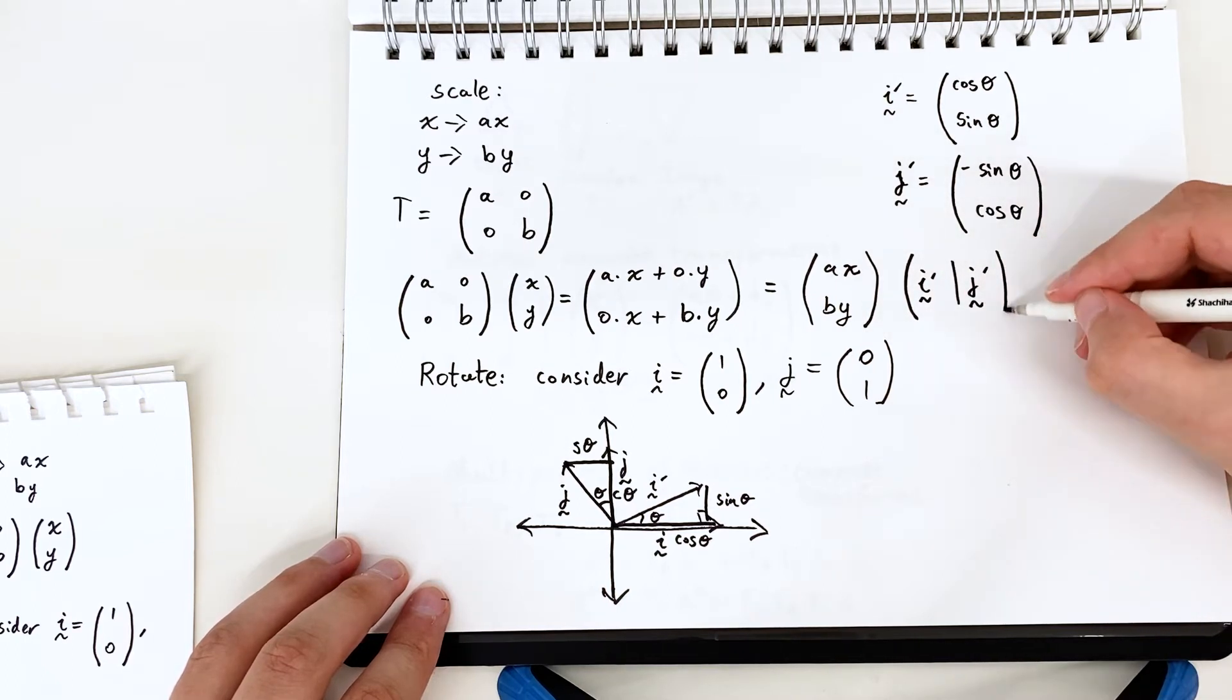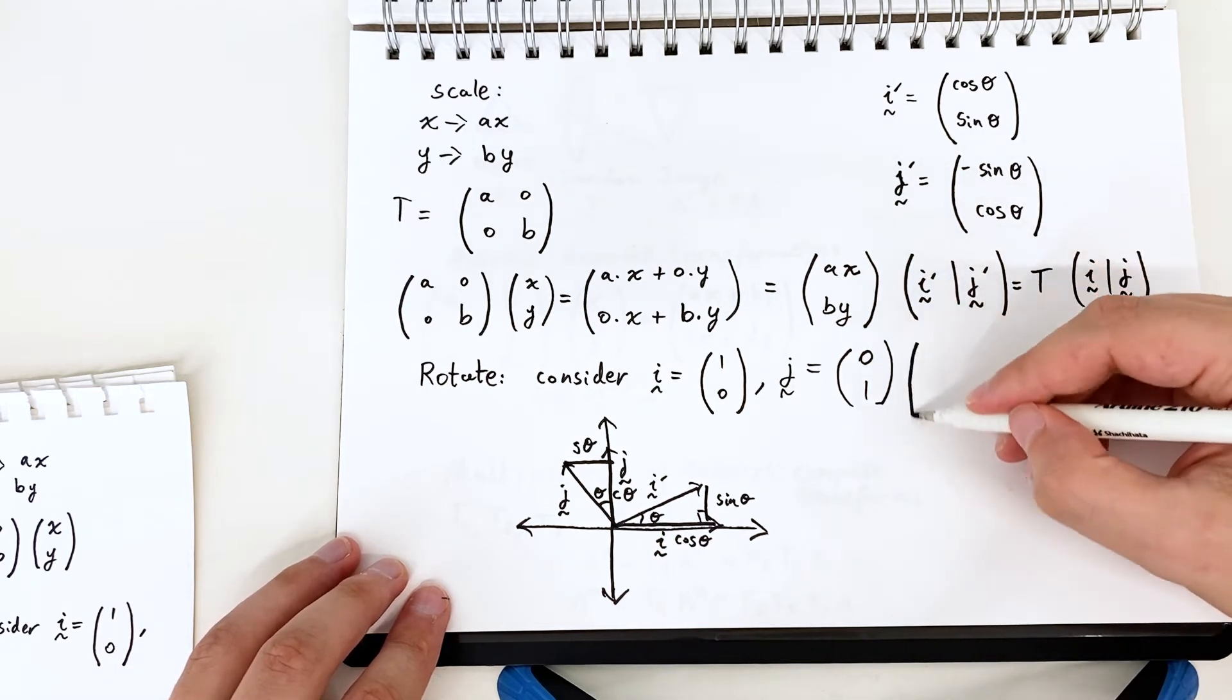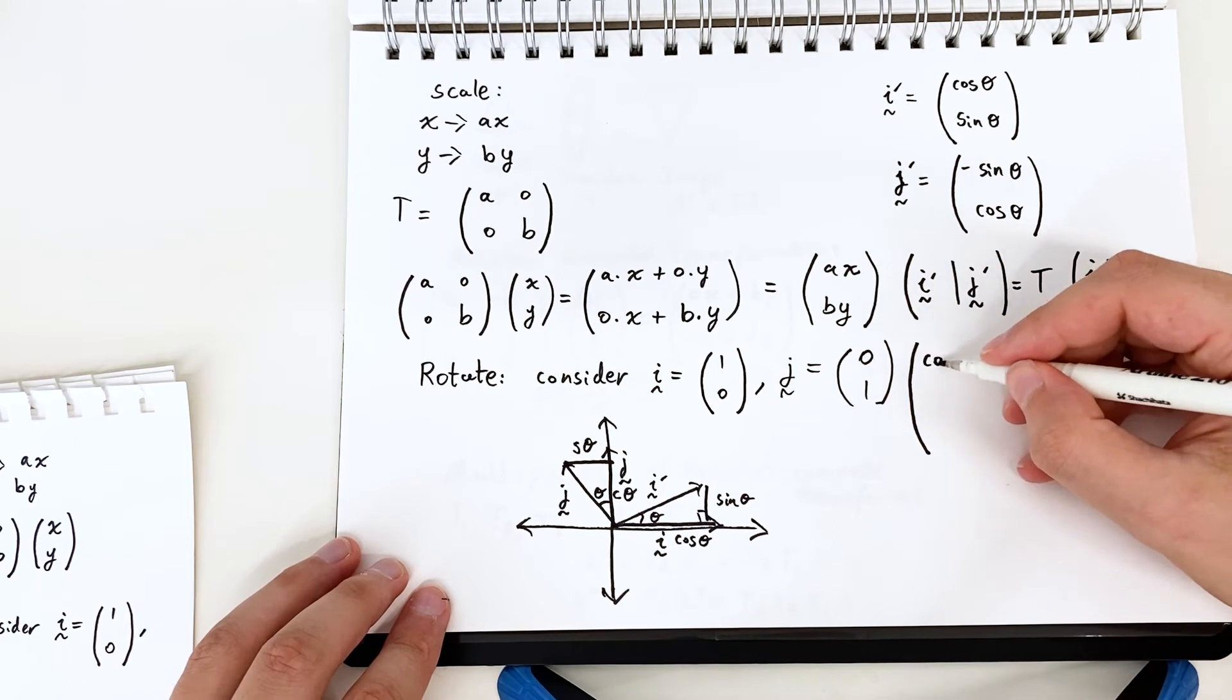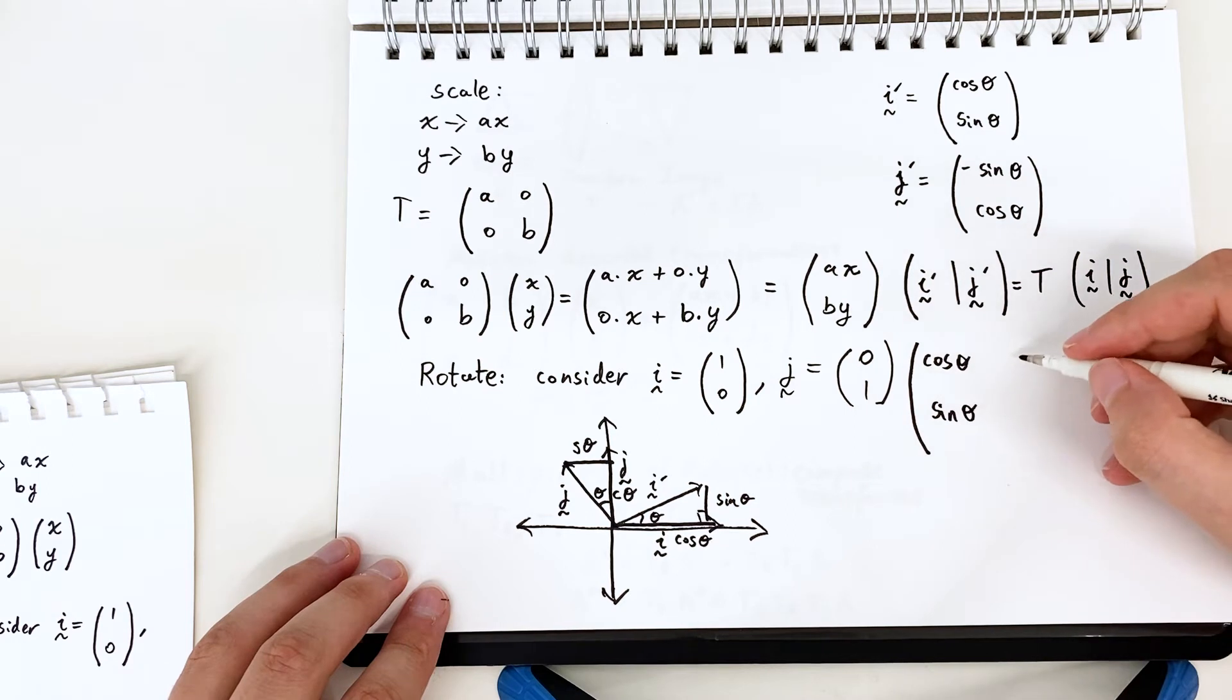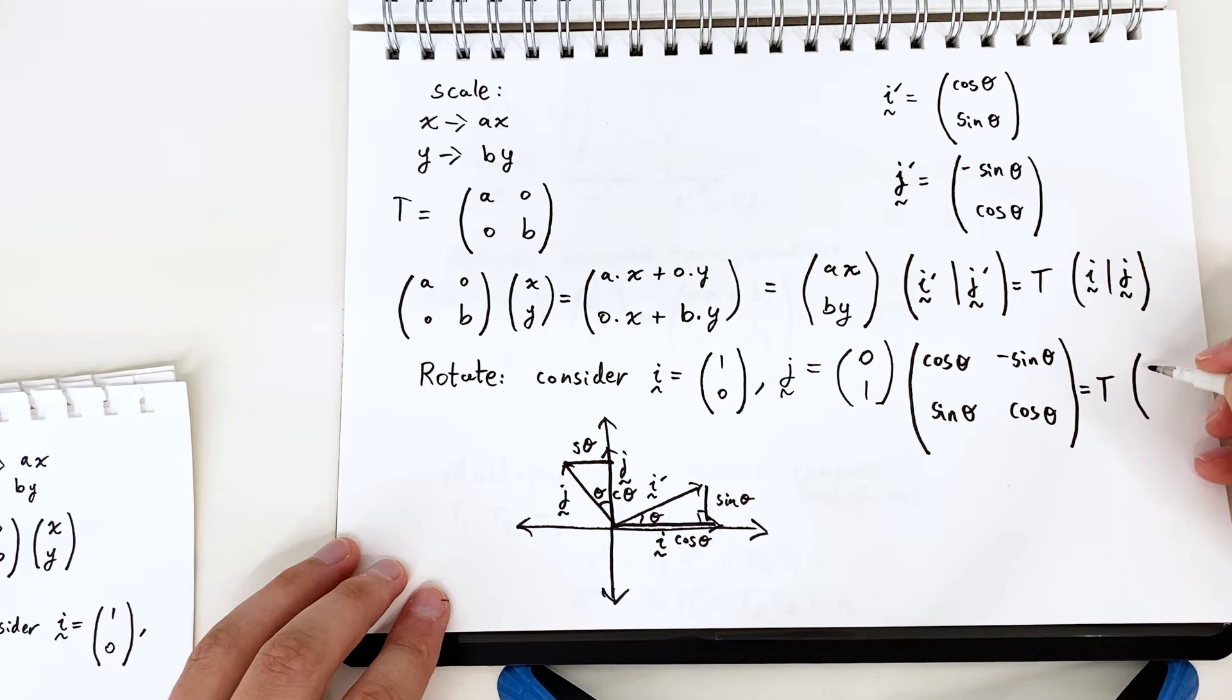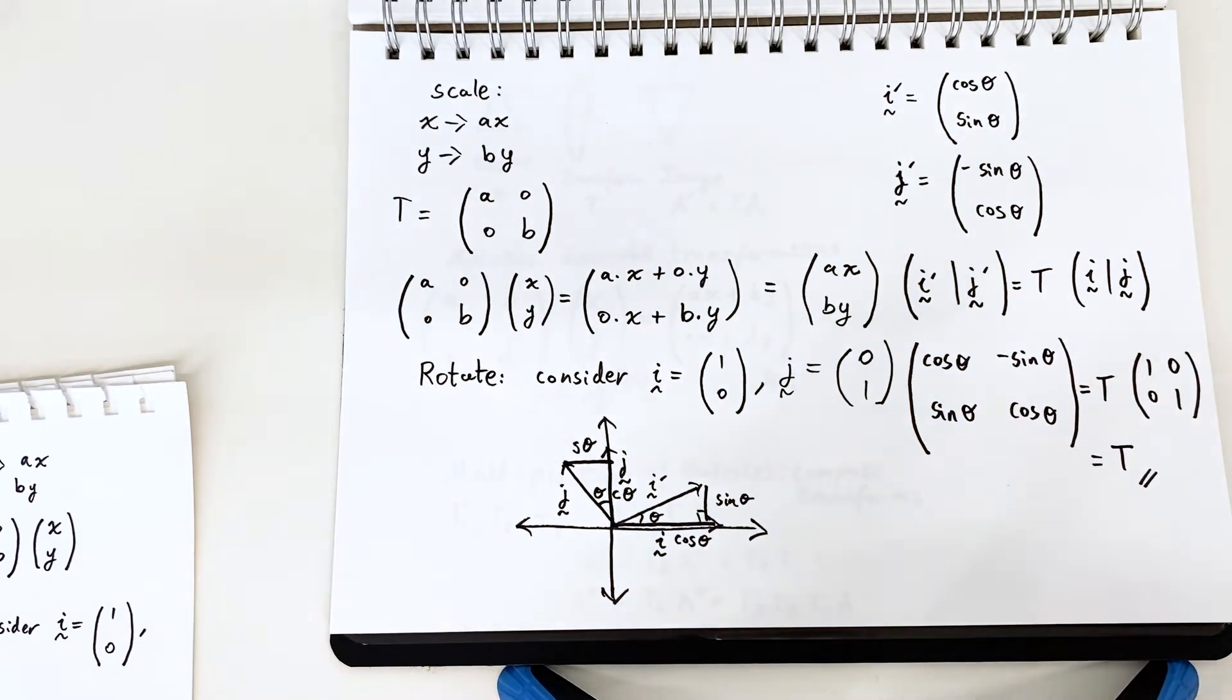Then we can write this transformation out. This is using column notation. So we have T and we hit i and j individually with T and that produces the columns i dash and j dash. That's the image. Then we put in the vectors as before and we can see that on the right hand side the matrix i j is actually the identity. So it's a bit of trickery. We got a formula for the rotation transformation.